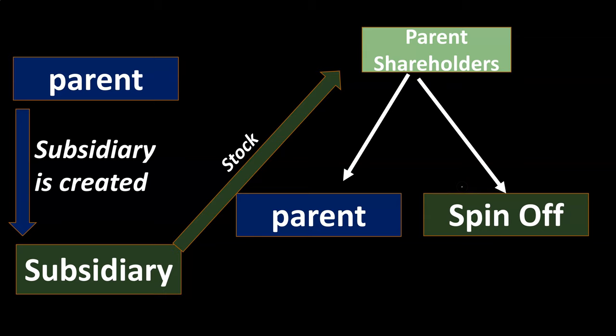The spinoff lets the parent company focus in on what they believe is their core value. It also allows the spinoff company to focus on its own core value without any relationship between the two, since the assumption is that these are two different industries pursuing different goals — no longer related as divisions or in a parent-subsidiary relationship. The shareholders still retain ownership of the net assets of the whole package: both the parent and the spun-off company.